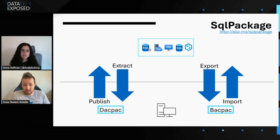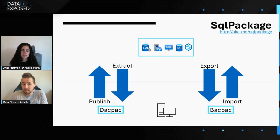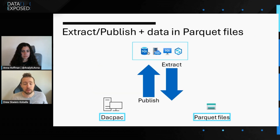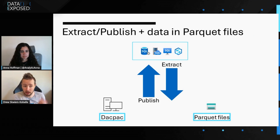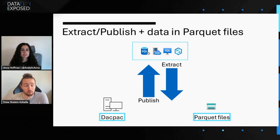A BACPAC is a single file and it's just zipped together, so it could literally be a 500 gigabyte file copy of a database. Whereas when we go to Parquet files, now we can spread them out across multiple folders. If I think about putting my schema on a DAC pack — that comes to my local computer — now my Parquet files, I decide what Azure blob storage account I want them to go to. Stepping back for a minute, if I think about my solution architecture, I'm running SQL Server 2022 in a VM on Azure in the East US data center.